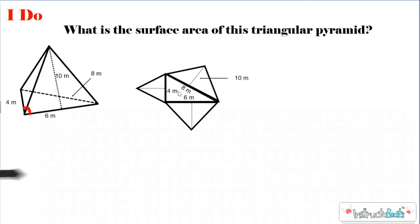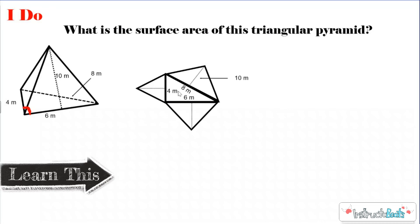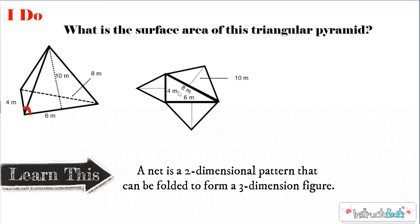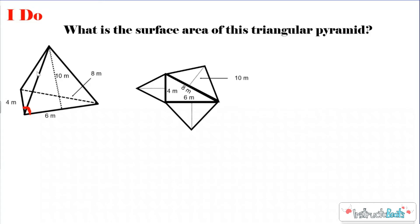A lot of times, they will use a net to help you see this. A net is a 2D pattern that can be folded to form a 3D figure. Here's kind of like this pyramid got cut along the edges and fell apart. Kind of like when you cut open a box and you take all the tape off, and sometimes it just falls apart. A lot of times, they use this net to help us kind of see all the different faces so we can figure out the area of each one.